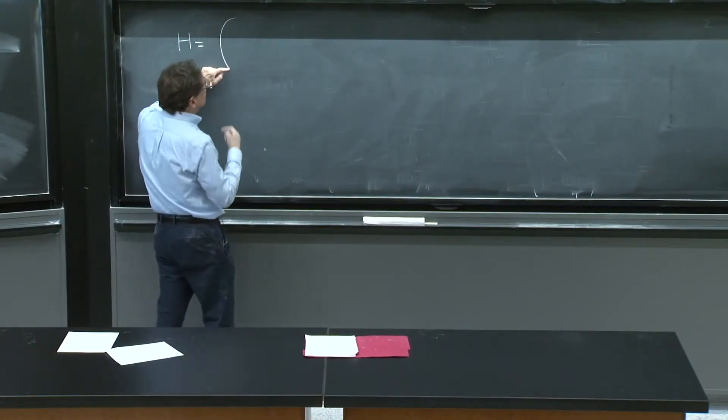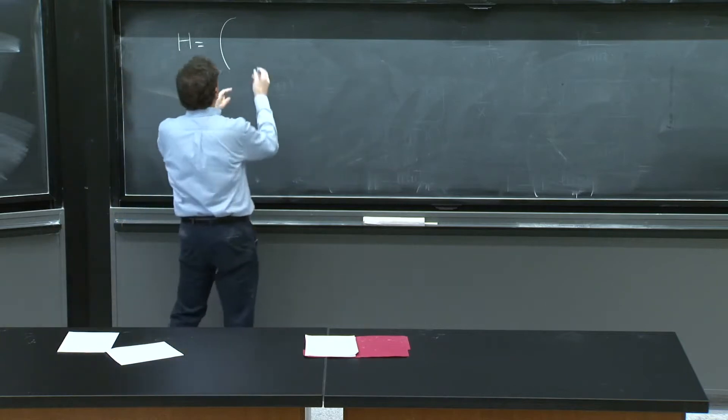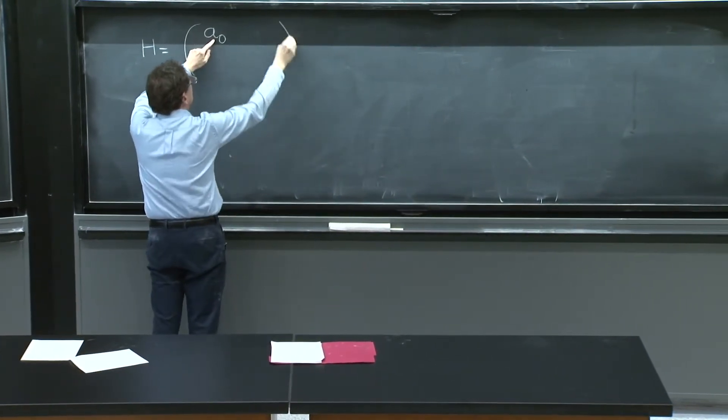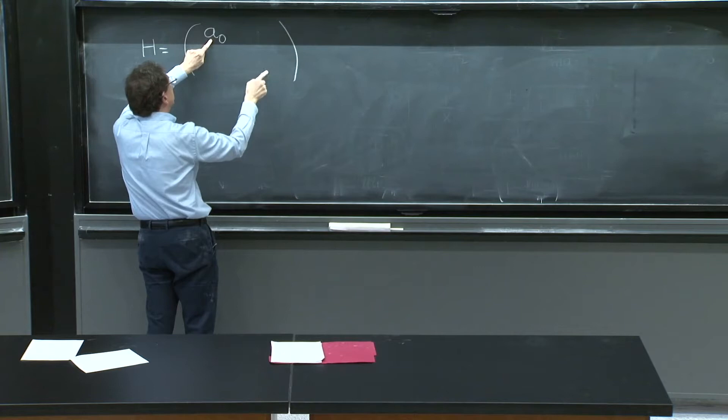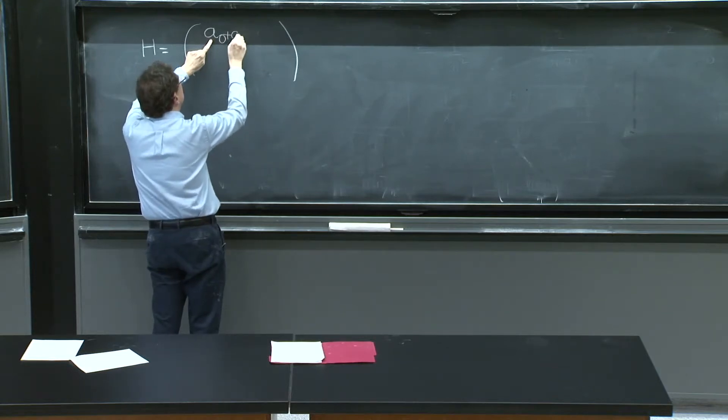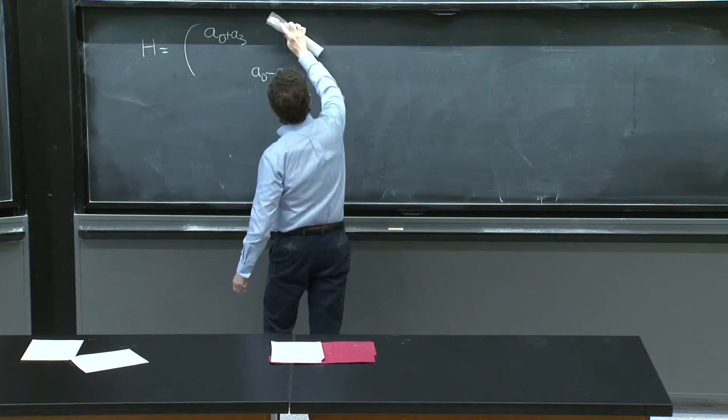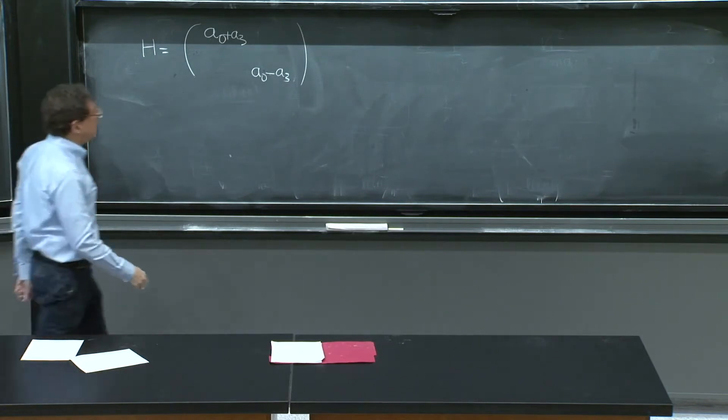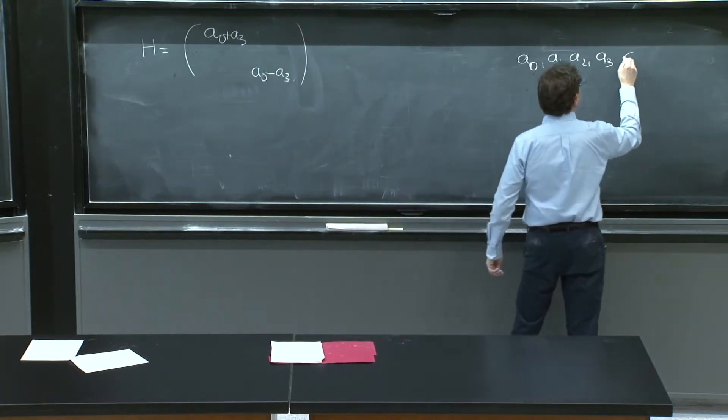Well, Hermitian means transpose complex conjugated gives you back the same matrix. So let's try to parameterize such matrix. I could put A0, a real quantity here, and another real quantity in the bottom. And if they are real, the transpose complex conjugate will remain the same. That's okay. So I could put A0 and A1 here. I'll do it in a little different way. I'll put A0 plus A3 and A0 minus A3 here. And they all should be real.